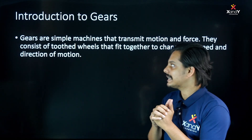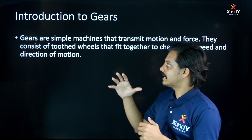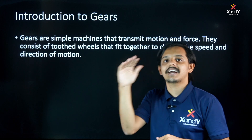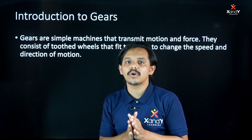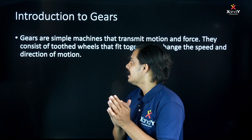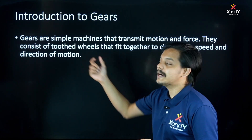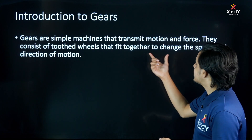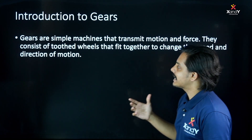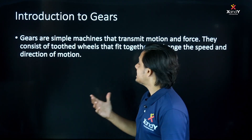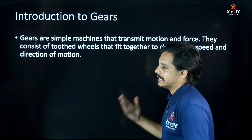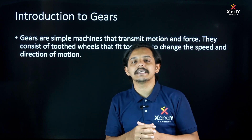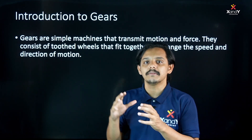Gears consist of toothed wheels that fit together to change the speed and direction of motion. Toothed wheels — that is, a chakram, a wheel — fit together to change the direction of motion and speed.